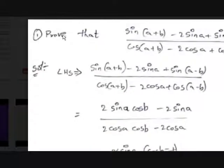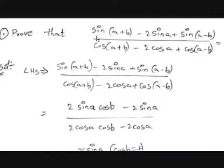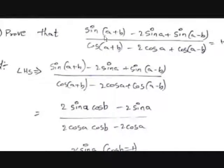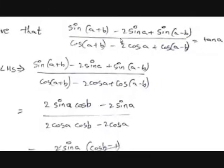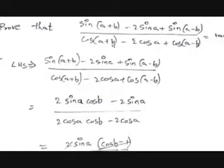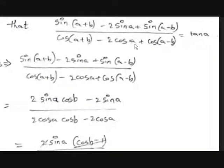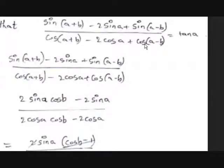Now let's see the second example. Here we should also prove: [sin(A+B) − 2 sin A + sin(A−B)] / [cos(A+B) − 2 cos A + cos(A−B)] = tan A.